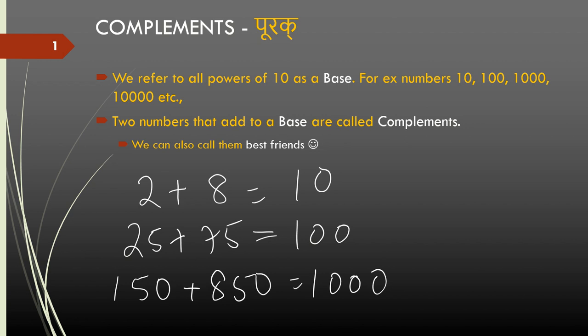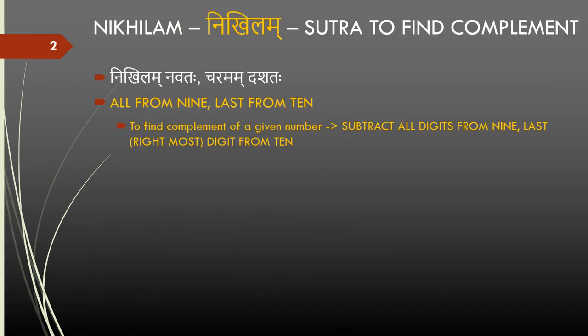So how do we calculate the complement of a given number? Very easily. In Sanskrit, we have a concept called sutra, which when roughly translated to English is a formula or a generalization. So the formula for calculating a complement reads as: all from 9 and last from 10. The sutras, as you can see, are easy to remember. In Sanskrit, it will read as Nikhilam Navataha, Cheramam from Dashataha.